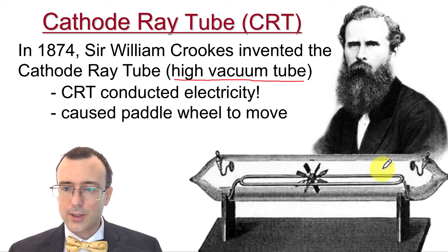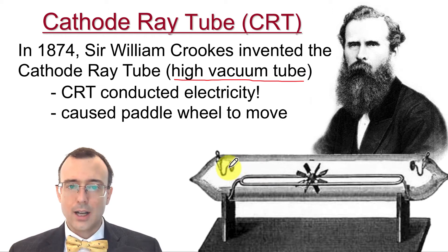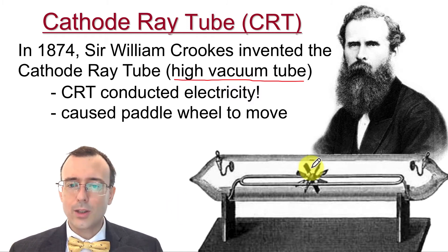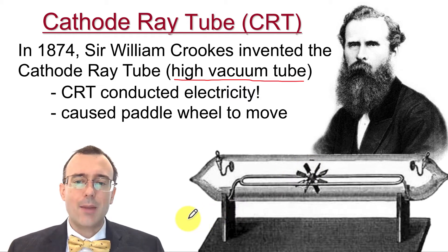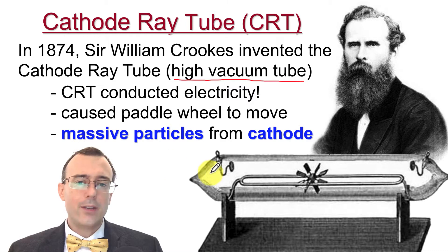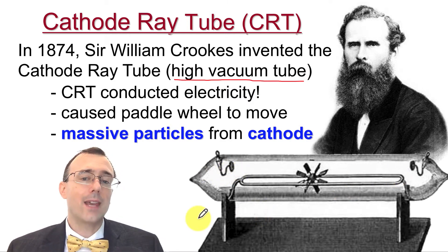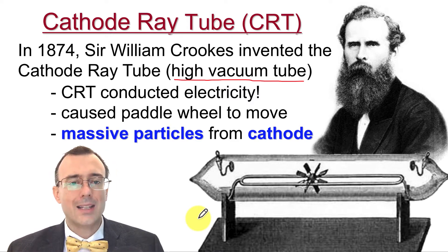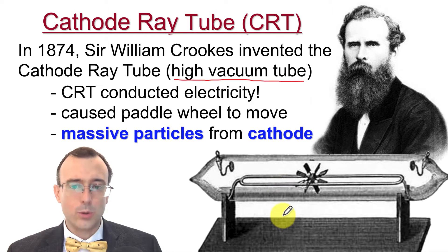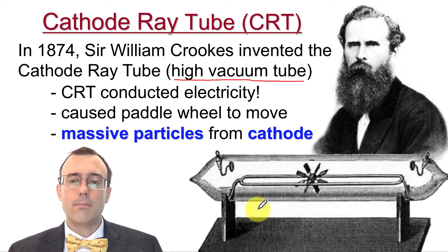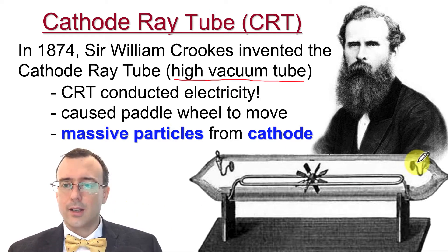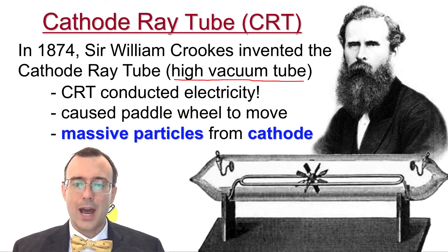Not only did the tube conduct electricity, but whatever that electrical conduction was, it was actually able to cause a paddle wheel inside to move. Light isn't able to move things like that, but this electricity could. So he concluded that these are massive particles — not meaning really heavy, but that they are made of particles that had mass. These particles were coming from the cathode, and only massive particles are able to actually move things like that.